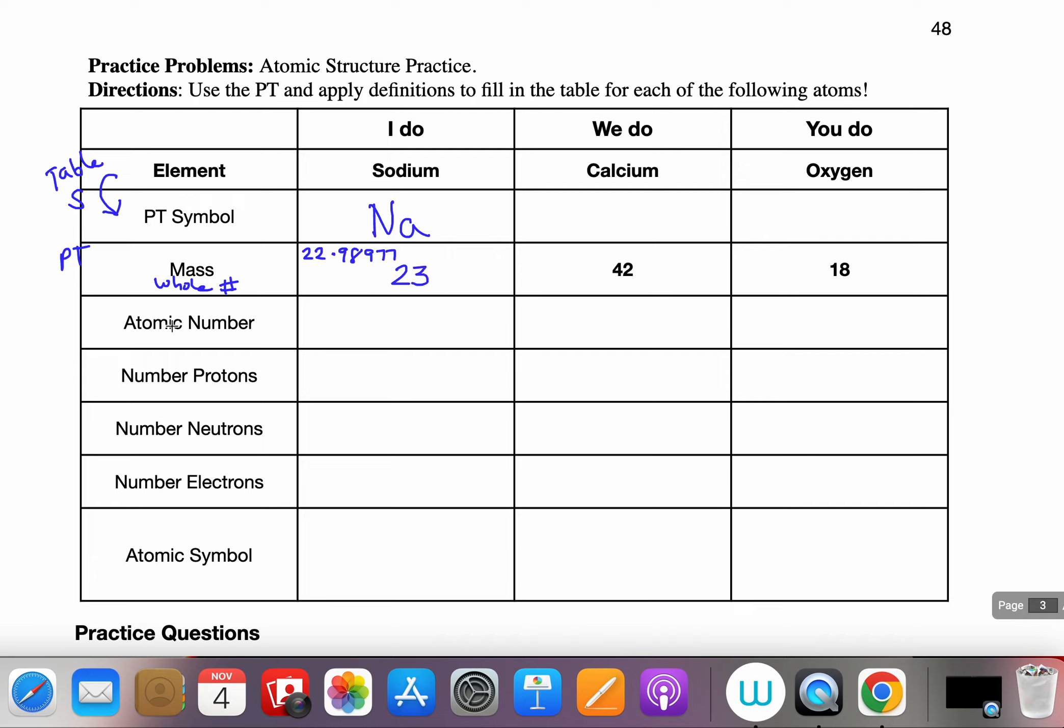Now I look also on the periodic table and I look at the atomic number, and the atomic number is that slightly large bolded number in Na's box. So this is the bolded number in its box and it is listed as 11. And based on the definitions that we supplied, the atomic number represents the number of protons. So because I know sodium's atomic number is 11, I also understand it has 11 protons.